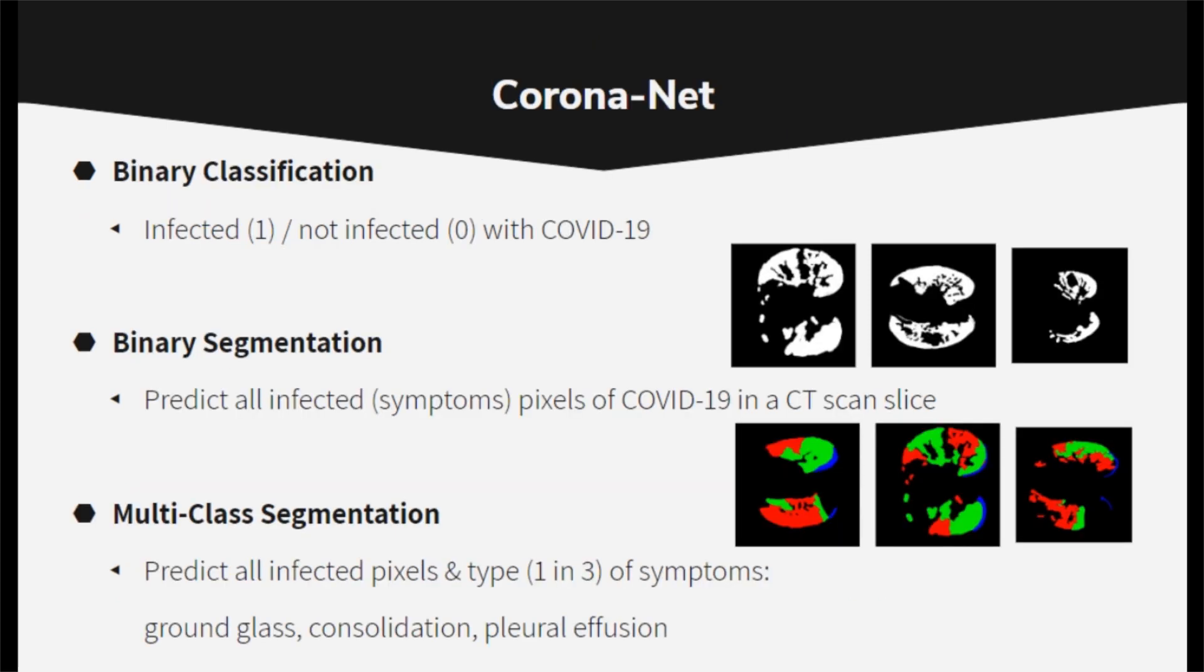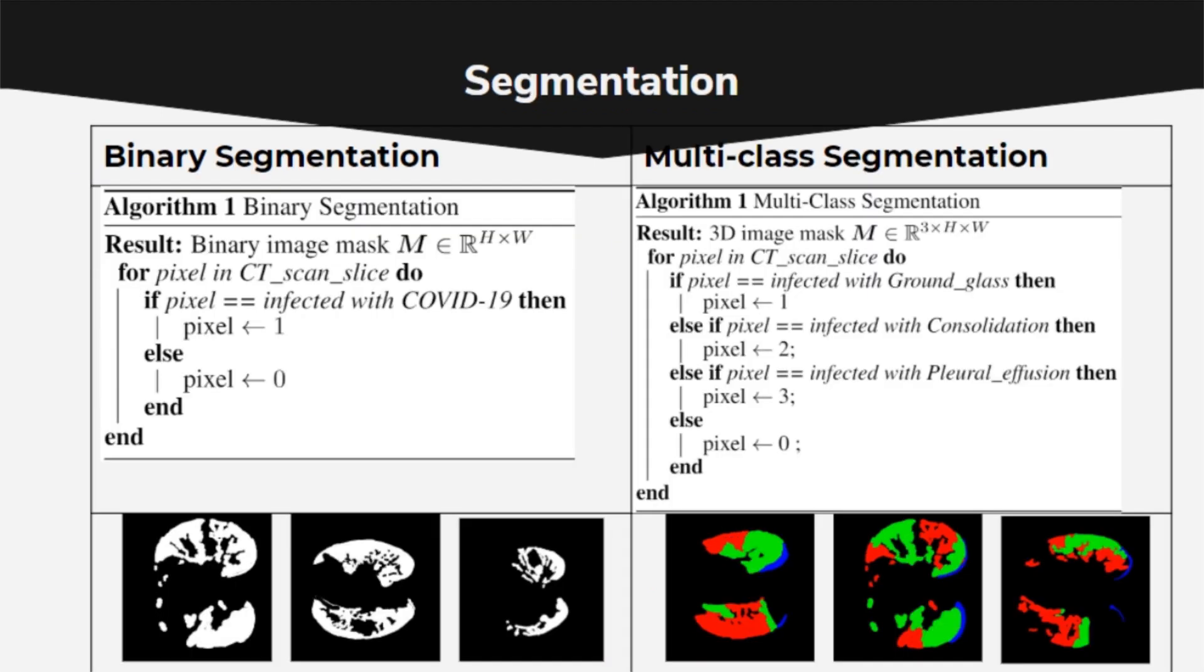With binary classification, I aim to predict from one chest axial CT scan slice whether or not a person has the coronavirus. With binary segmentation, I localize all pixels infected with COVID-19 symptoms. And with multi-class segmentation, I differentiate between ground-glass consolidation and pleural effusion symptoms for each pixel.